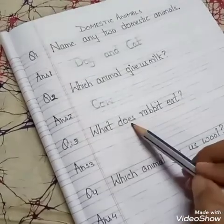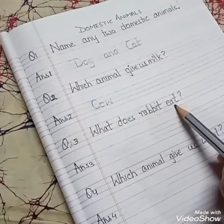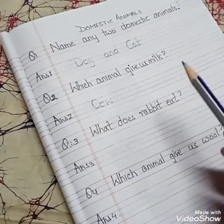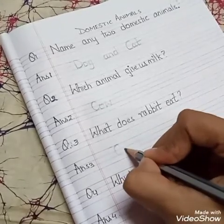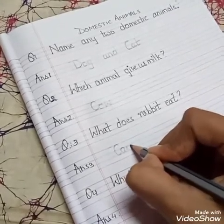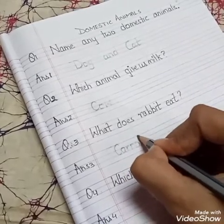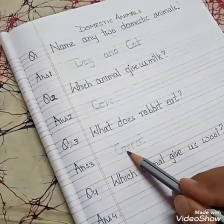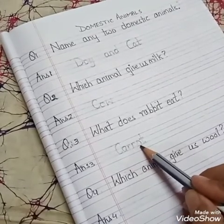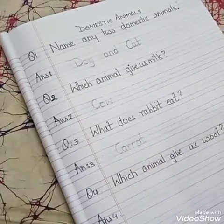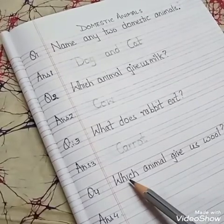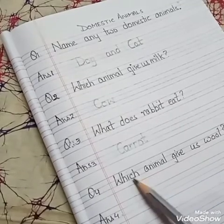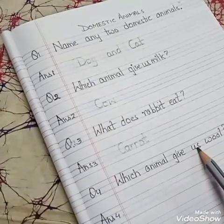What does rabbit eat? You all must be knowing what does rabbit eat. Yes, carrot. C-A-R-R-O-T. Carrot. Which animal gives us wool?